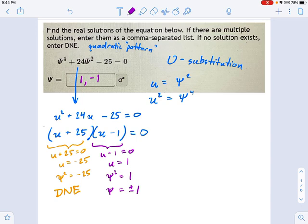The important part that I want you to get is this idea of using u-substitution when you see a quadratic pattern. In other words, whenever these powers are in a 2 to 1 ratio, or 4 to 2, or 6 to 3, or anything like that, you can turn this into a quadratic using u-substitution.